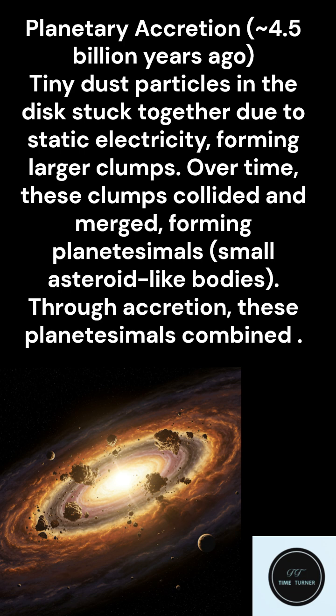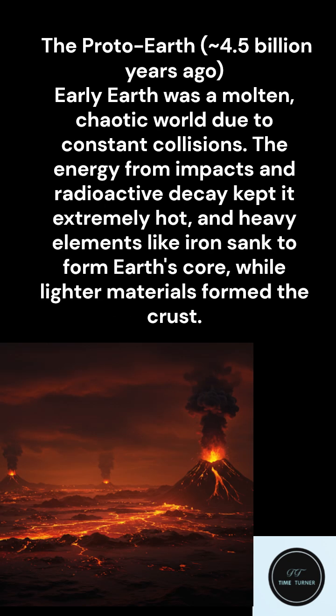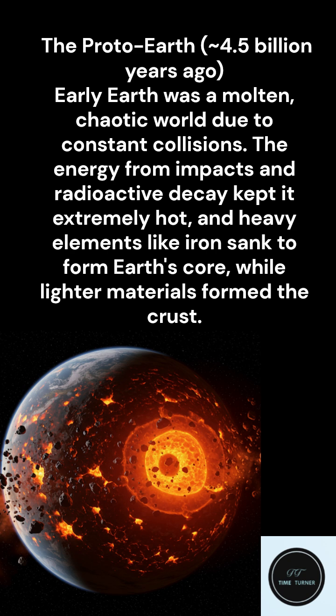So we're basically cosmic leftovers from this flat disk of dust. How on Earth did we get a whole planet? That's where things get really interesting. It's a process called planetary accretion, and it all started about 4.5 billion years ago. Imagine tiny microscopic grains of dust just floating around in this disk — they start bumping into each other and sticking together. Even static electricity played a role.